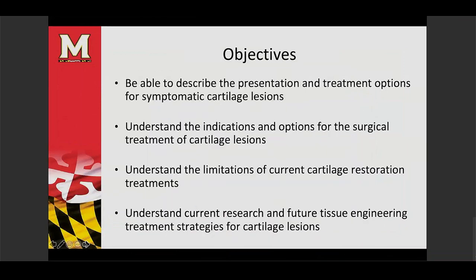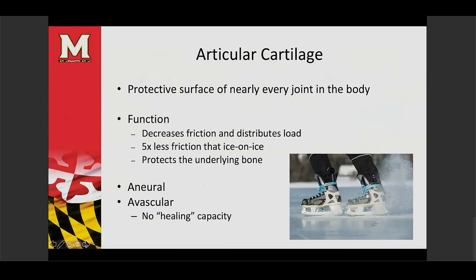I have no disclosures. Our articular cartilage is a protective surface found in nearly every joint in the body. It has many different functions, but the primary function is to decrease load across the joints to protect the underlying bone and also decrease friction so that the bones can move nicely and easily against each other. It has to be very strong because stresses come in all different types of forces — compressive forces, but also shear forces — so it has to be able to withstand different vectors of force.